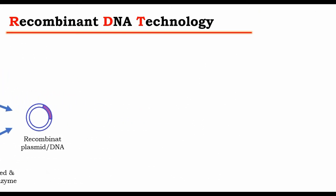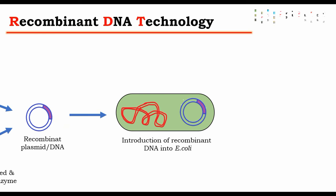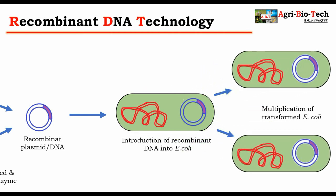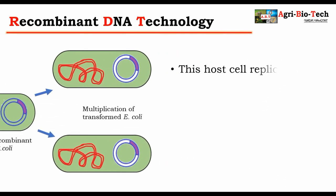This recombinant DNA is introduced into the host cell. The host cell can be a bacterium or a yeast cell. Methods used for introduction are transformation, transduction, and vectorless gene transfer. In the host cell, this recombinant DNA can replicate and form clones.